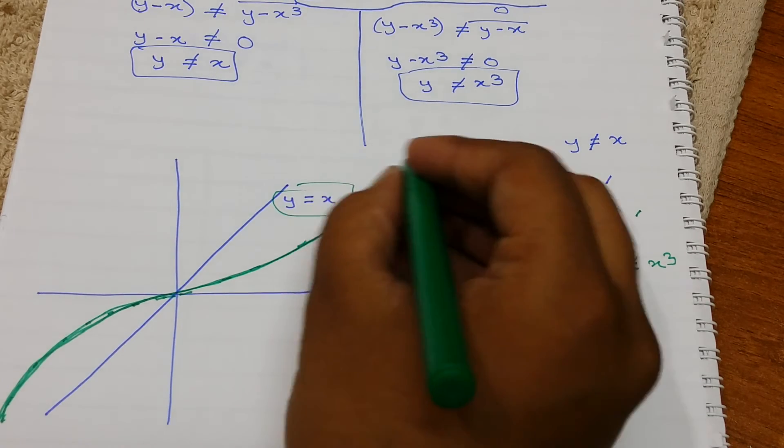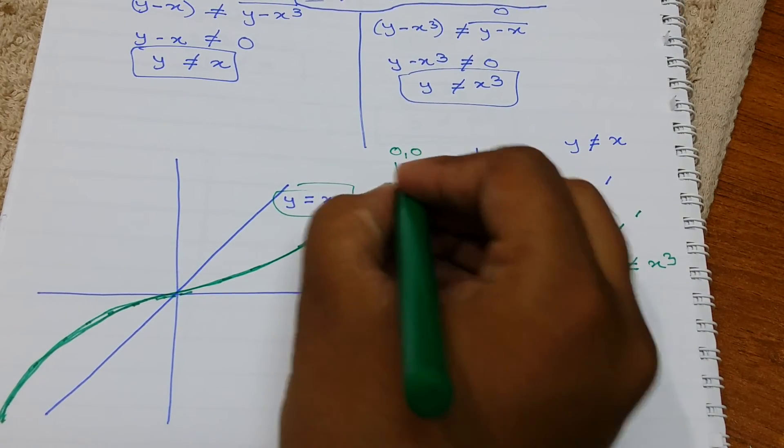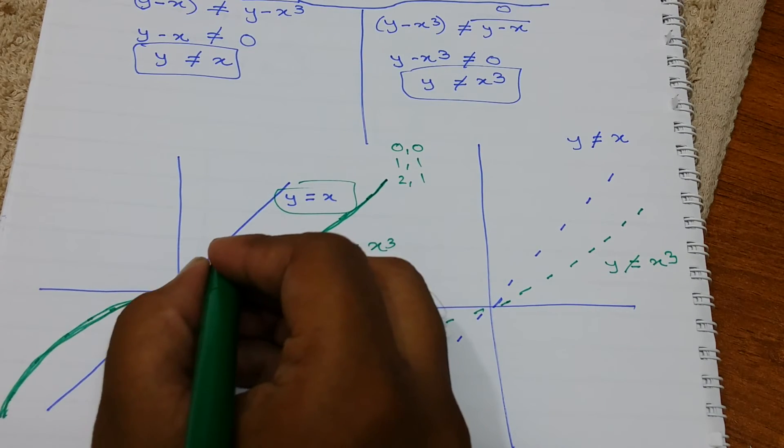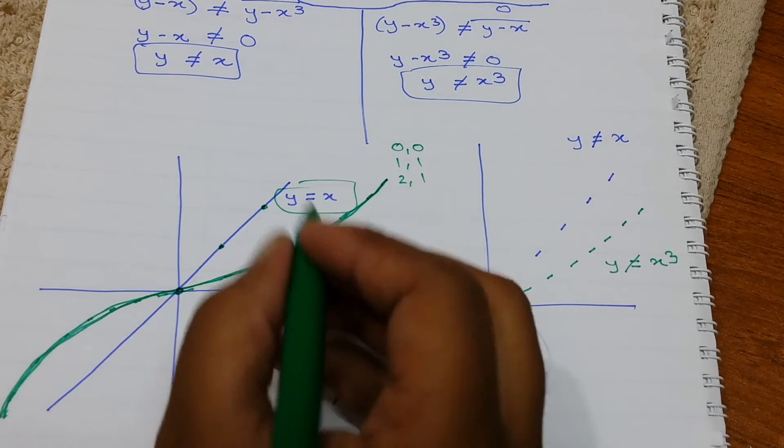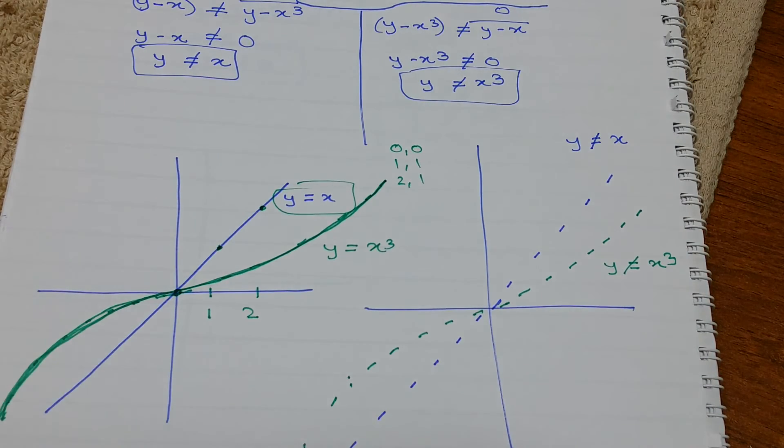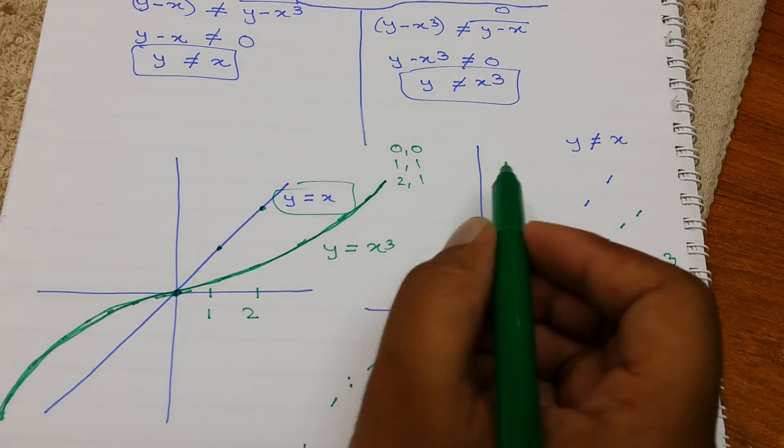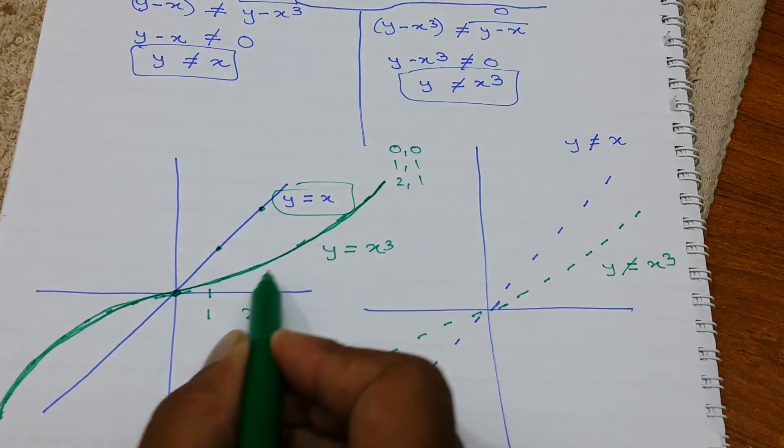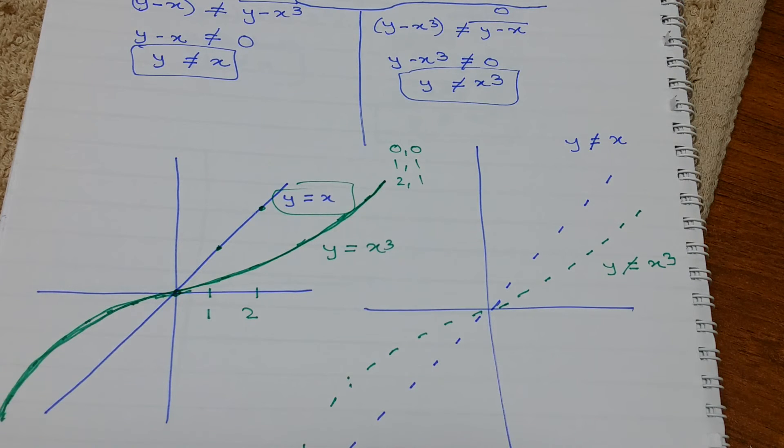And (0,0) is here, (1,1) is right here, and (2,2) is right here if we have our 1 and 2 over here. So that is how you can plot the values. You can also plug in 0, 1, 2, 3, 4 and you'll get a nice curve like this.